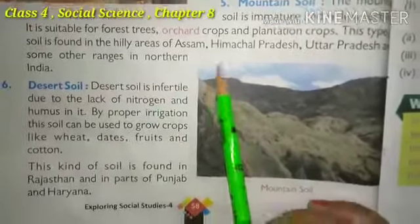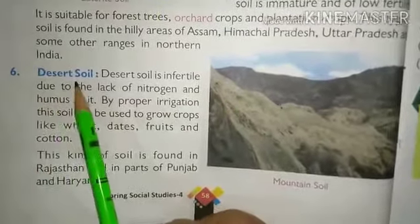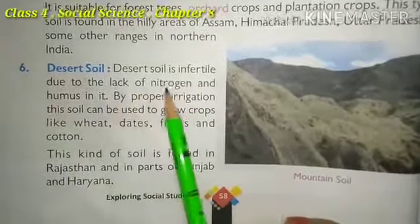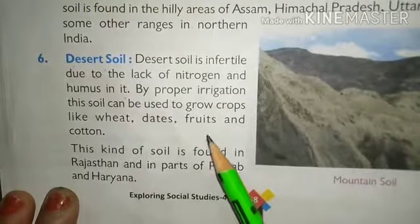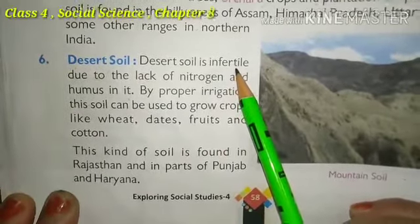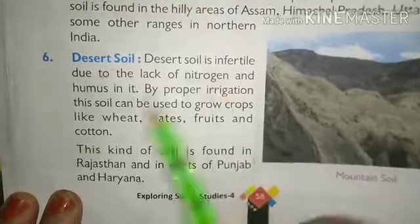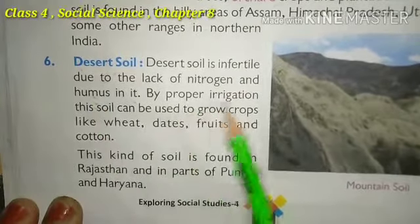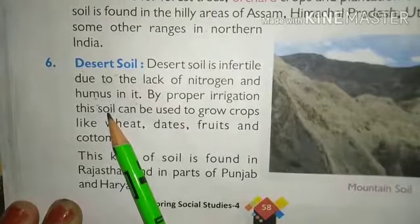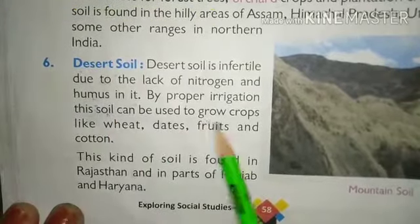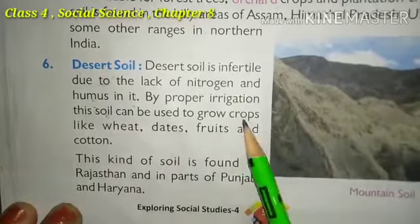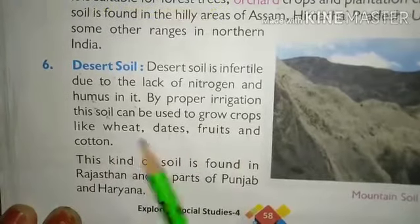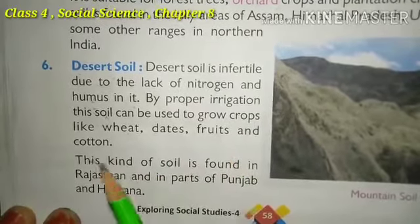Now we come to number six, that is desert soil. Desert soil is infertile due to the lack of nitrogen and humus in it. This desert soil is very infertile and unproductive because it lacks nitrogen and no fertilizer chemicals are found in it. However, with proper irrigation, this soil can be used to grow crops.